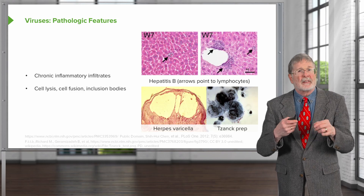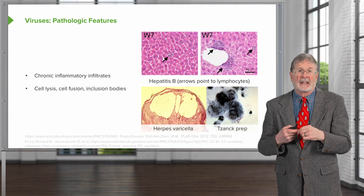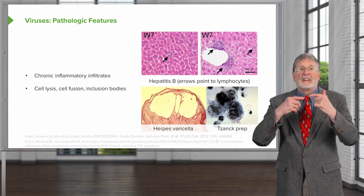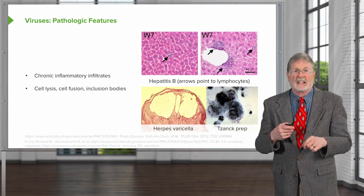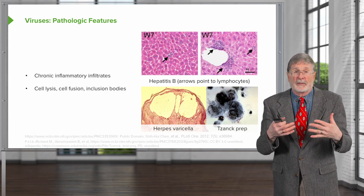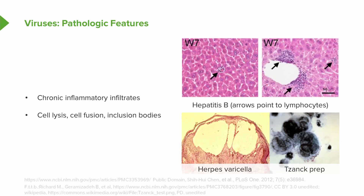We can also see some effects directly related to the virus. We can have cell lysis — we're seeing a blister in a patient that had herpes varicella, otherwise known as chickenpox, which developed as a result of lysis of the cells within the epidermis. Sometimes the cells can fuse because the virus makes it easy for two different cells to fuse their membranes and become a multi-nucleated cell. Again in herpes varicella, the lower right-hand panel is a Tzanck prep: if you unroof a blister, touch a microscope slide to it, and pull it back off, you'll see multiple multi-nucleated cells due to fusion — that's a positive Tzanck prep.